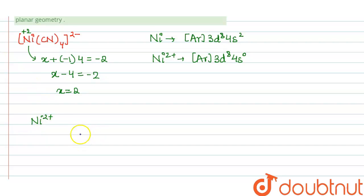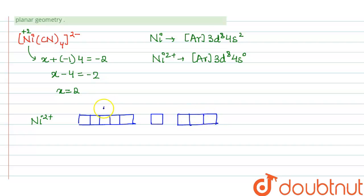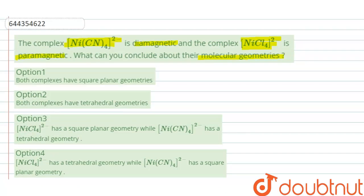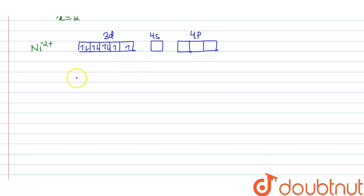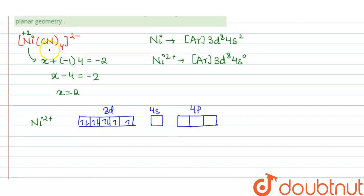For Ni²⁺, in the d orbital, showing 3d, 4s, and 4p: there are 8 electrons in 3d. Since the complex is diamagnetic, it has no unpaired electrons, so the two electrons will get paired up. It forms a complex with four cyanide ligands, which donate their lone pairs to nickel, causing Ni²⁺ to undergo dsp² hybridization.